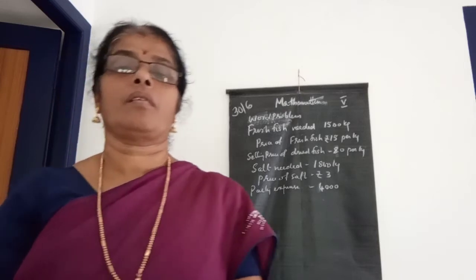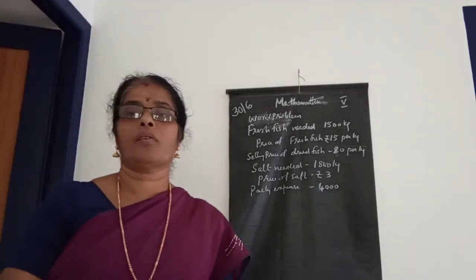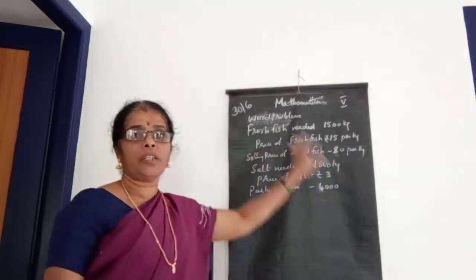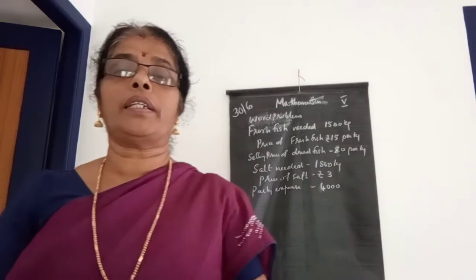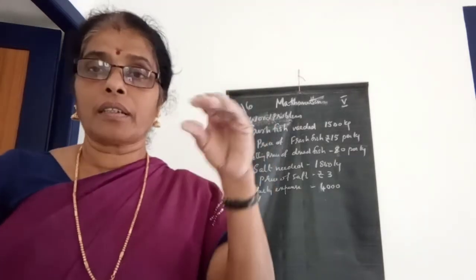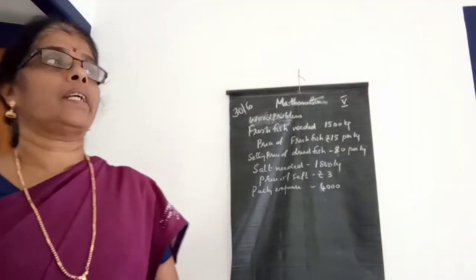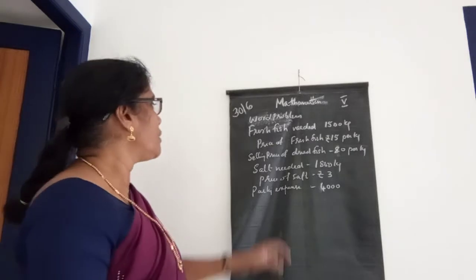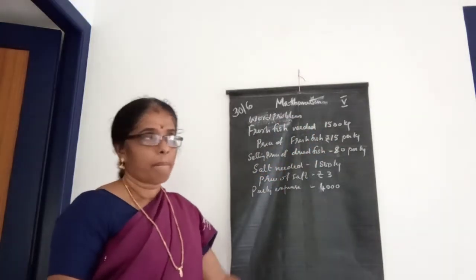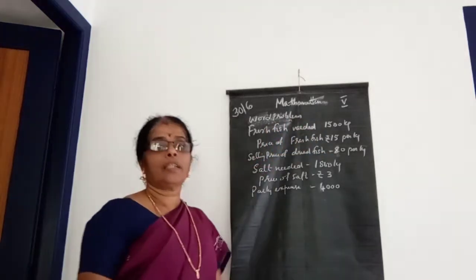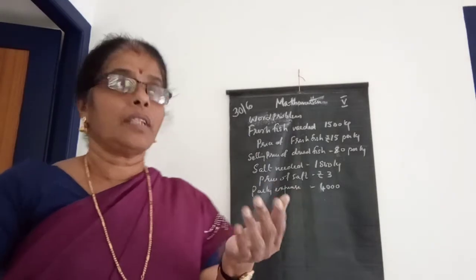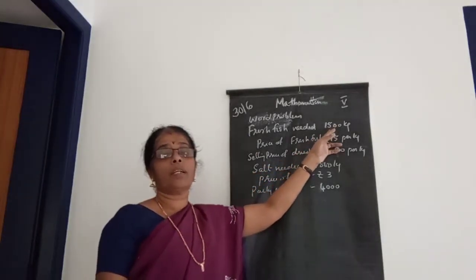Good morning children. Today we can discuss a word problem. Two ladies planned to buy some fresh fish and convert it into dried fish, to find out how much profit they are getting. They planned to buy 1500 kilograms of fresh fish. When that fresh fish is dried, it becomes one third of 1500 kilograms.